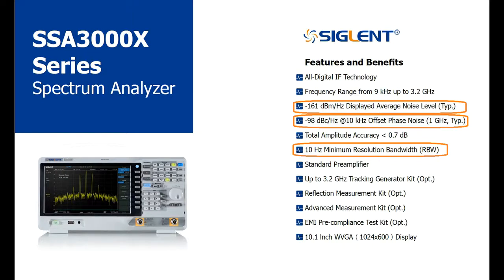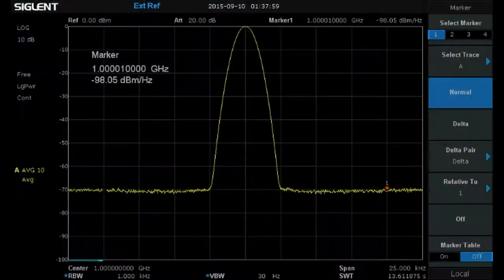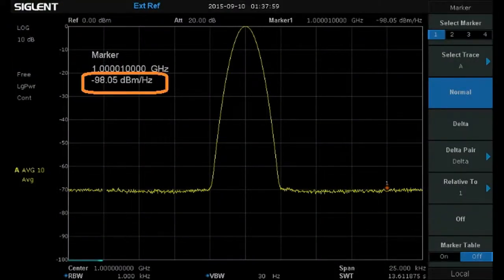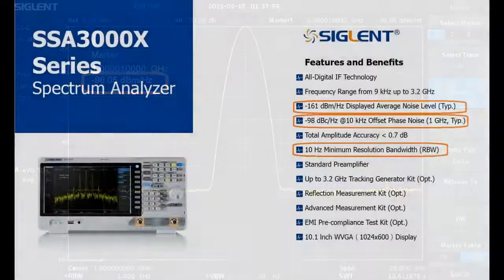To accurately evaluate the performance of an RF source such as an AM transmitter, local oscillator, or clock circuit, the phase noise of your measurement system needs to be lower than the phase noise of the transmitter. The SSA 3000X delivers with respectable phase noise of minus 98 dBc per hertz at a 10 kHz offset.